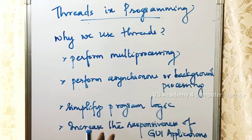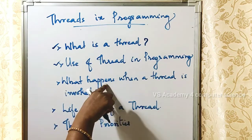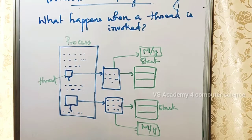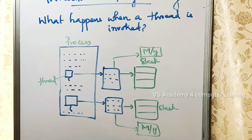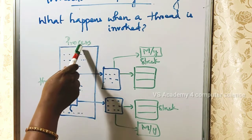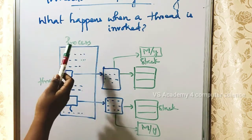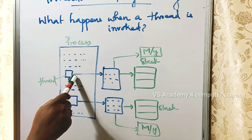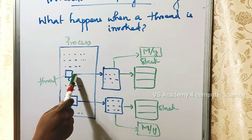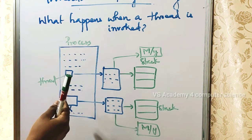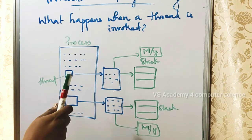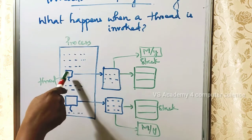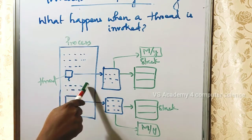So these are the common uses of a thread. Next, what happens when a thread is invoked or called? A process means a program under execution. When you invoke a thread within a process, there are two pathways — the thread creates a separate line of execution alongside the main process.